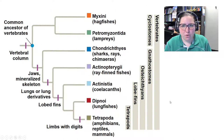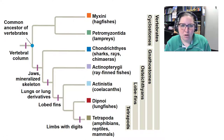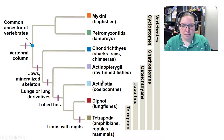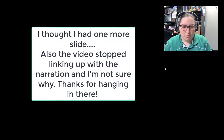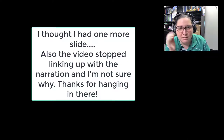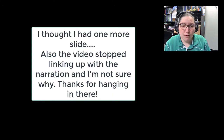For chordates specifically, pay attention to vertebrate classes: Myxini and Petromyzontida (cyclostomes/jawless), Chondrichthyes (cartilaginous skeleton), Actinopterygii (ray-finned fish), Sarcopterygii (lobe-finned fish), and the tetrapods — amphibians, reptiles, and mammals. Spend time memorizing these and feel free to reach out with any questions. This first unit has a lot of memorization.